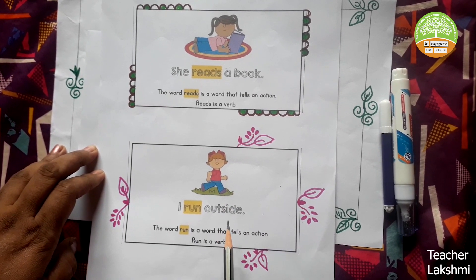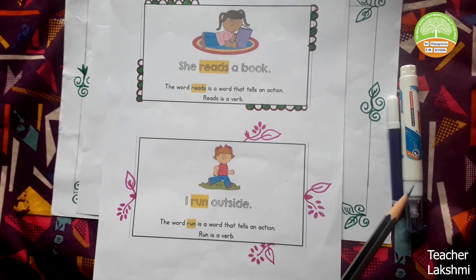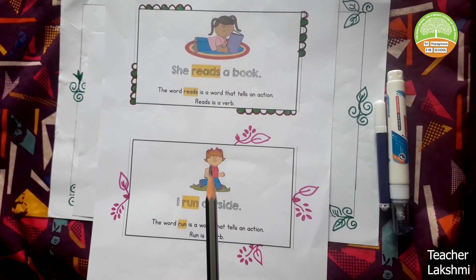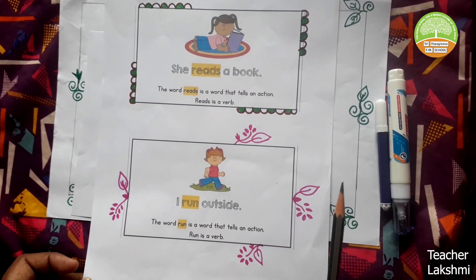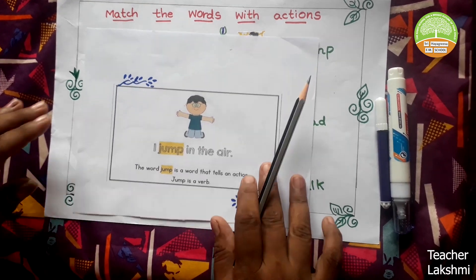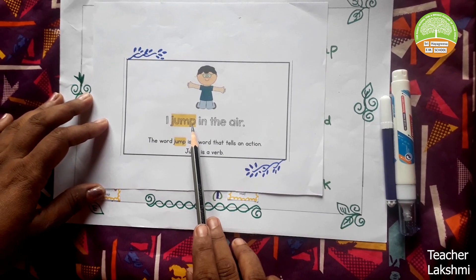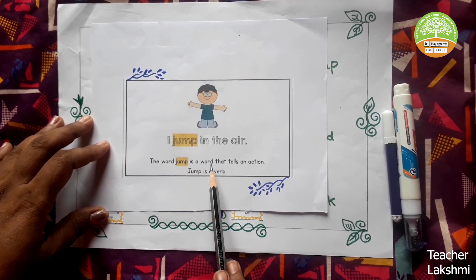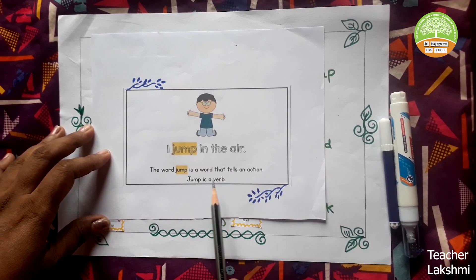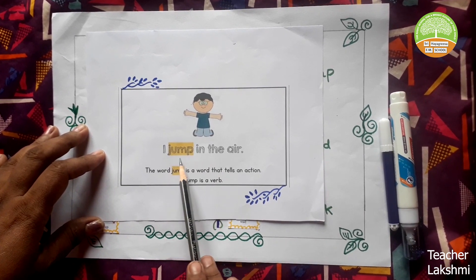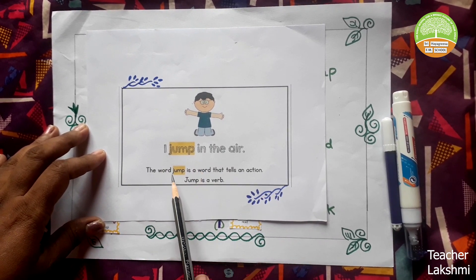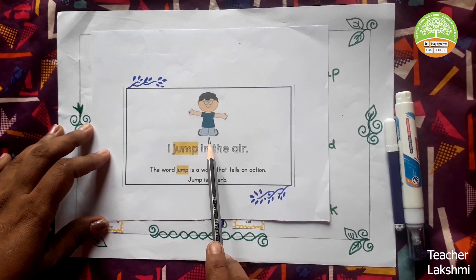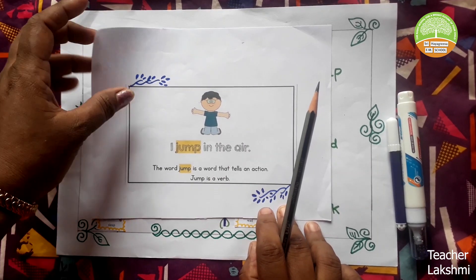Run is an action word. We can go with so many examples like eat, play, reads, and run with the sentences. Another example we can see here: I jump. I jump in the egg. The word 'jump' is a word that tells an action. Jump is a verb. Here, jumping is also an action, and jump is also called as a verb. We can see a small boy jumping in the egg. These are all called as actions.